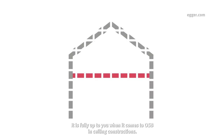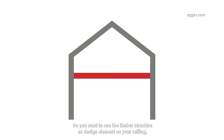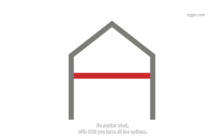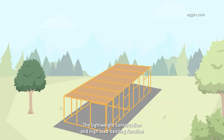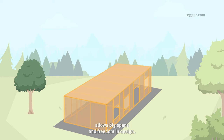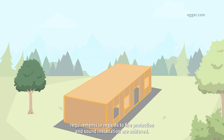It is fully up to you when it comes to OSB in ceiling construction. Do you want to see the timber structure as a design element on your ceiling, or do you prefer to use it as a functional installation layer? No matter what, with OSB you have all the options. The lightweight construction and high load bearing function allows big spans and freedom in design. With both on-site construction and industrial prefabrication of ceilings, requirements regarding fire protection and sound insulation are achieved.